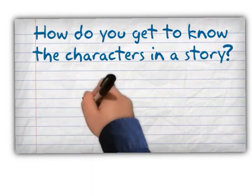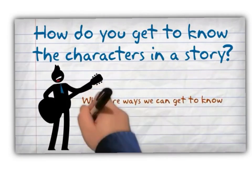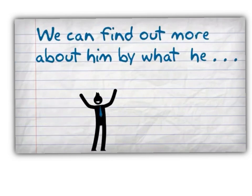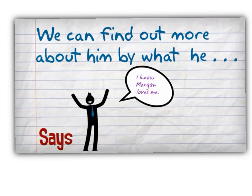How do you know the characters in a story? What are ways we can get to know this guy? We can find out more about him by what he says. For example: 'I know Morgan loves me!'